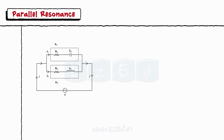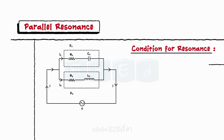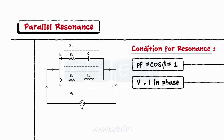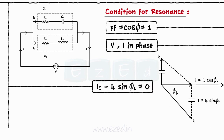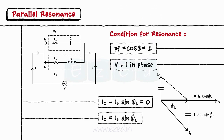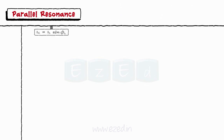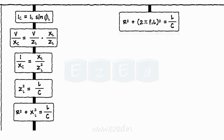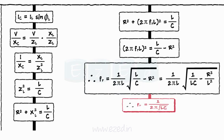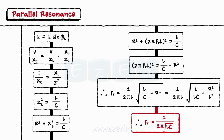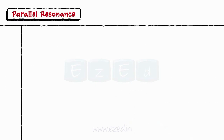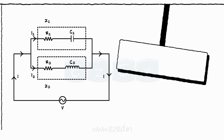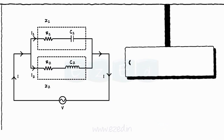Similar to the AC series circuits, the parallel circuit is resonant when the power factor is unity, or the voltage and the current are in phase. From the phasor diagram, resonance will only occur when the current through the capacitor equals the current through the inductor. The frequency at which resonance occurs is called the resonant frequency, given by: f equals 1 upon 2π times the square root of (1/LC minus R²/L²). The Q factor of the parallel RLC is given by (1/R) times the square root of L/C.